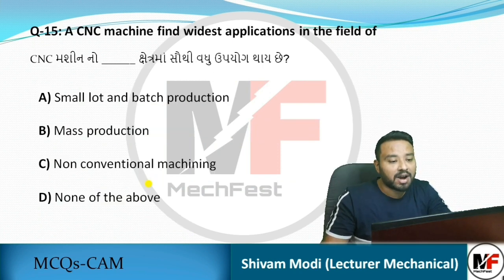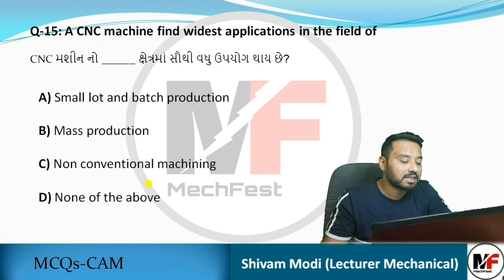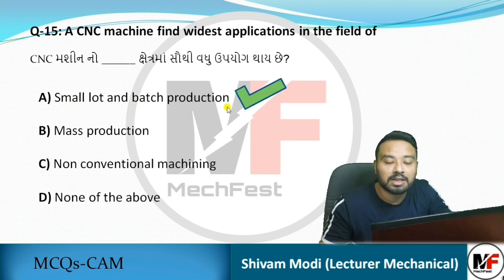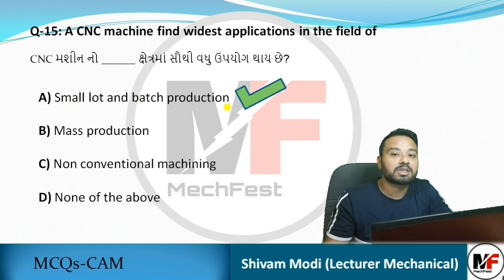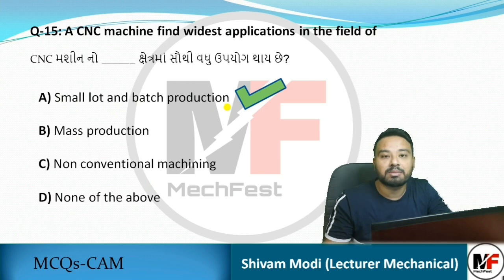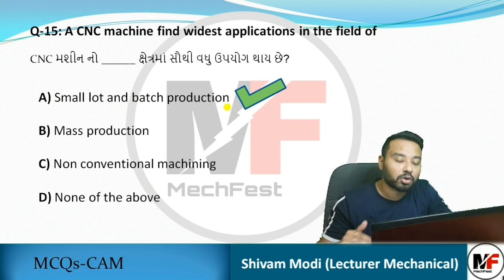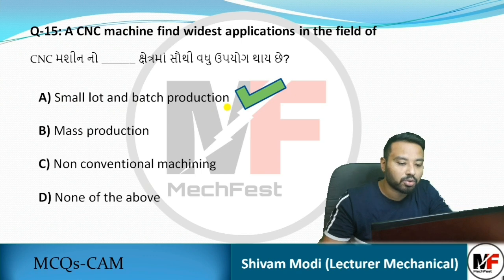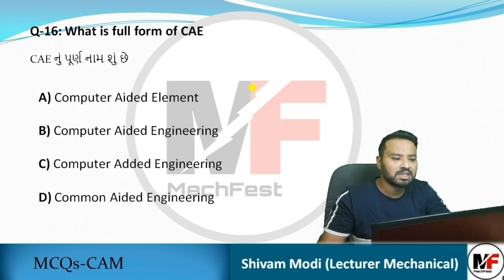Next MCQ: A CNC machine finds its widest application in the field of what? The answer is small and medium lot batch production – CNC is most widely used in batch production systems because of higher flexibility, where the product keeps changing and CNC machines are used more in such scenarios.